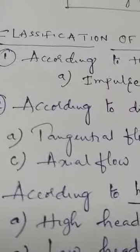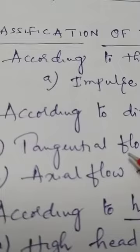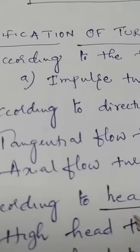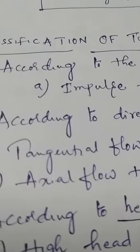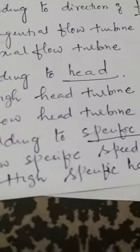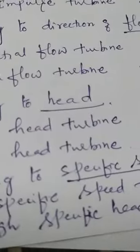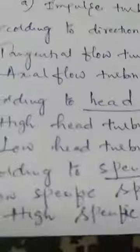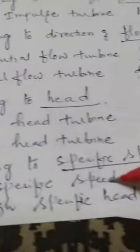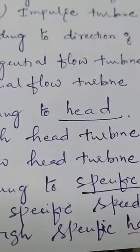The second classification is according to direction of flow: tangential flow turbine, radial flow turbine, axial flow turbine, and mixed flow turbine. The third classification is according to head — the height from head race to tail race: high head turbine, medium head turbine, and low head turbine. The fourth classification is according to specific speed: low specific speed turbine, medium specific speed turbine, and high specific speed turbine. Specific speed will be explained in the next topic.